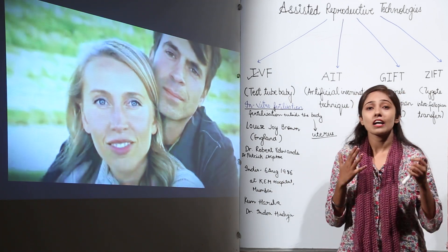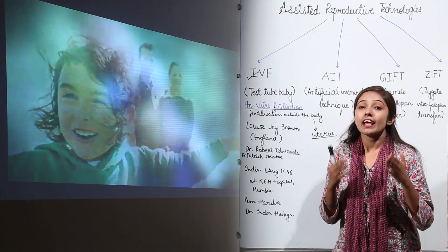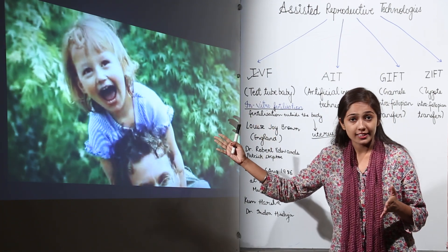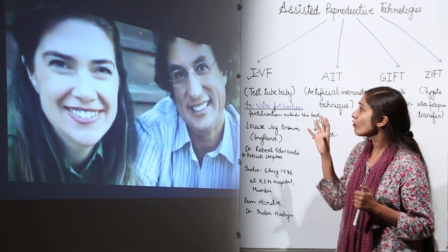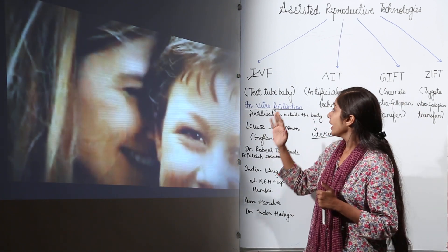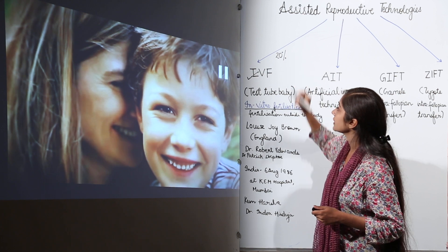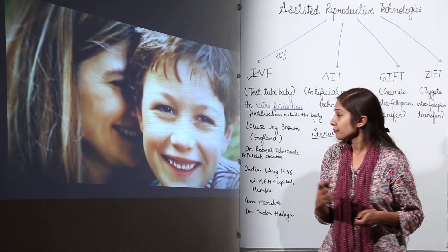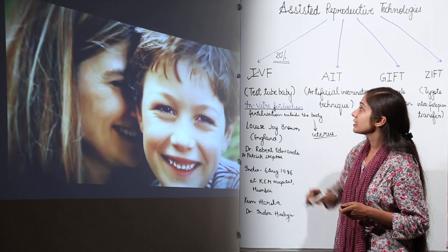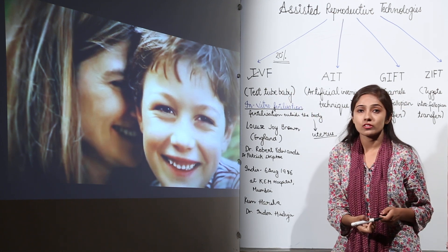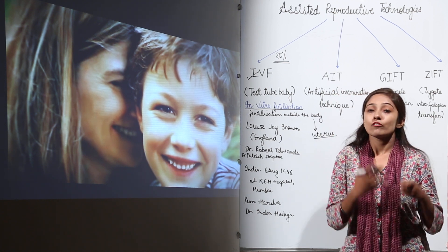This is how many couples opt for test tube babies, or in vitro fertilization, to have a normal and healthy child. However, the overall success rate of IVF is just 20%, which is quite low — so test tube baby survival is quite tough. There are many other technologies that couples can opt for to have their own children.